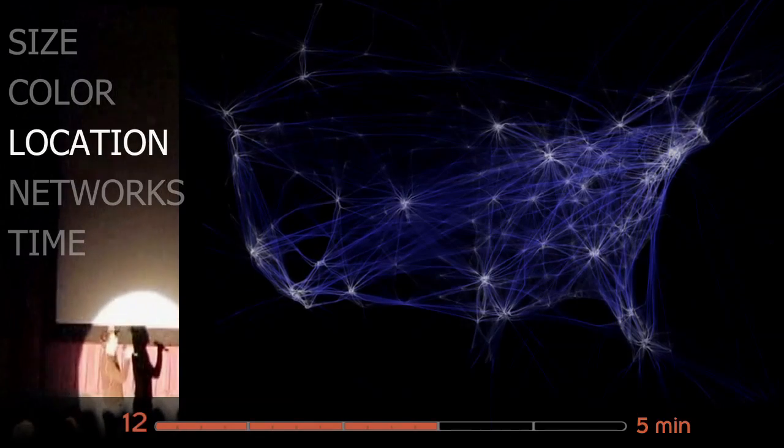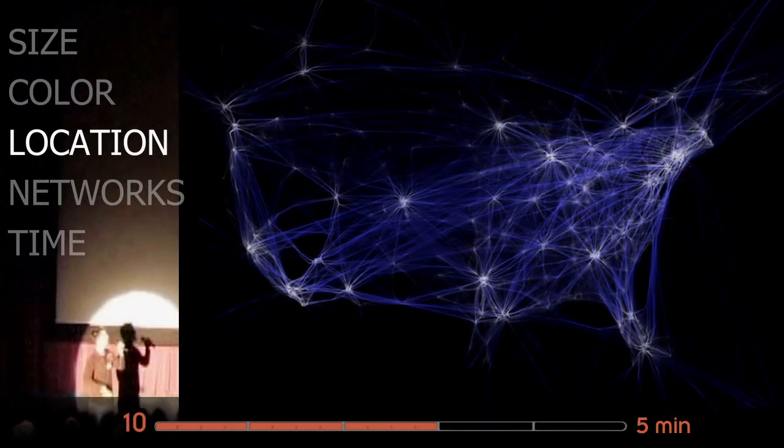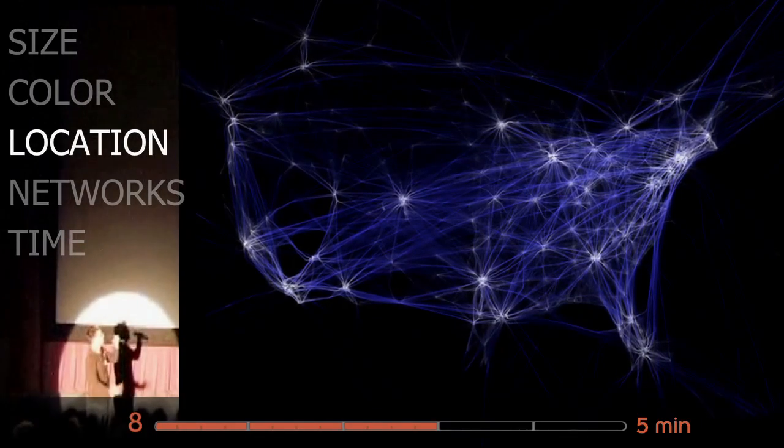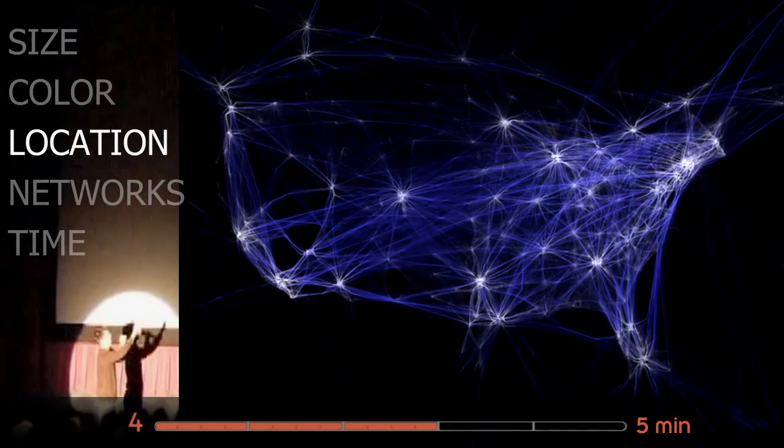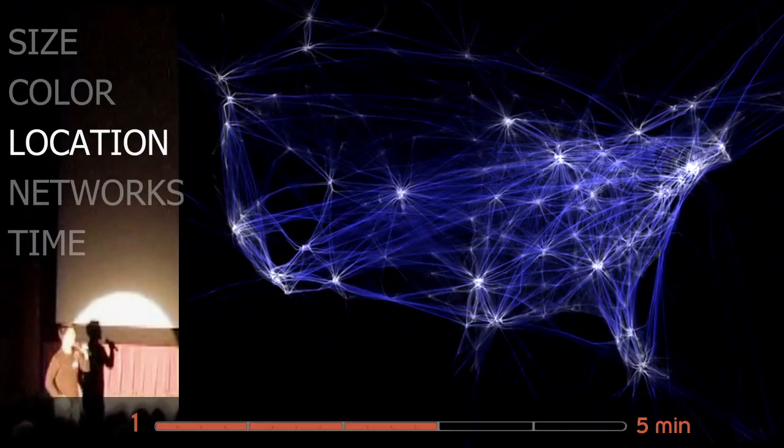This is a visualization of all of the flight patterns in a single day. Because we're using location, we can see hubs. We can see, oh, there's a lot more flight density in the east than there is in the west. That kind of thing.